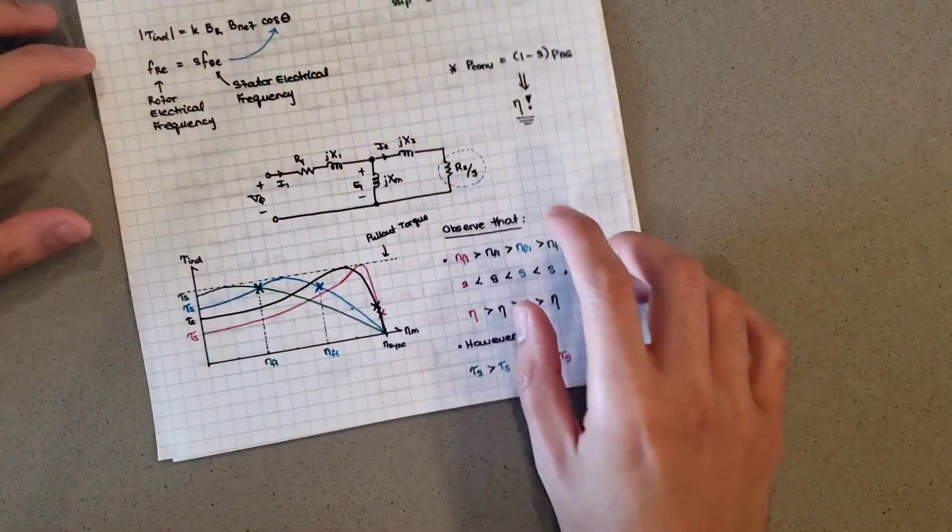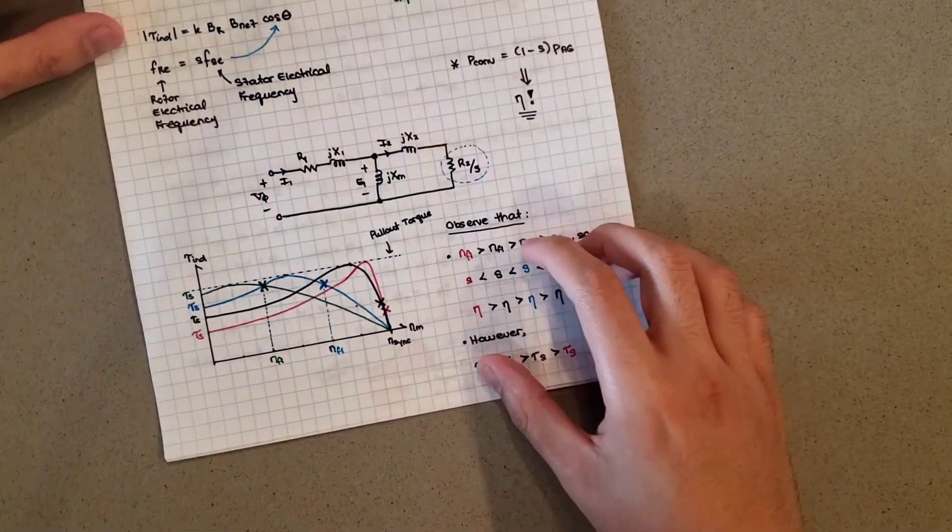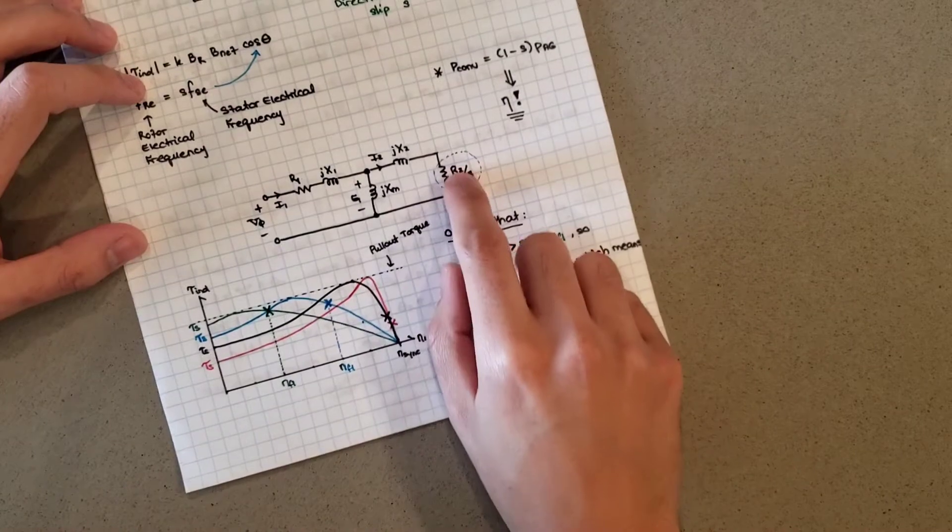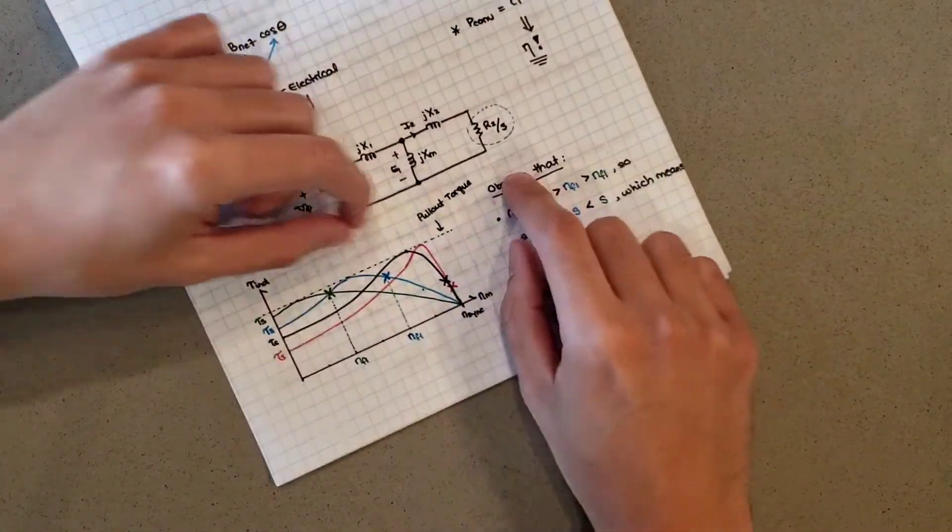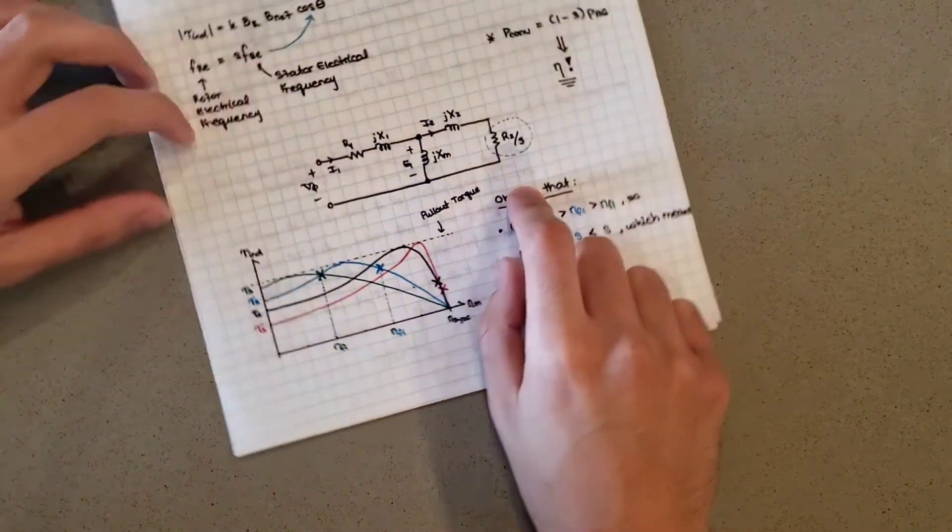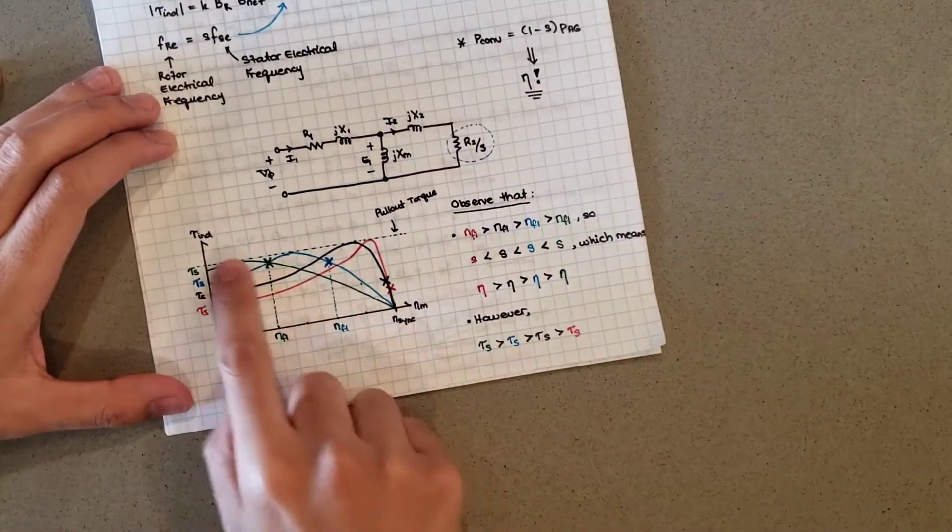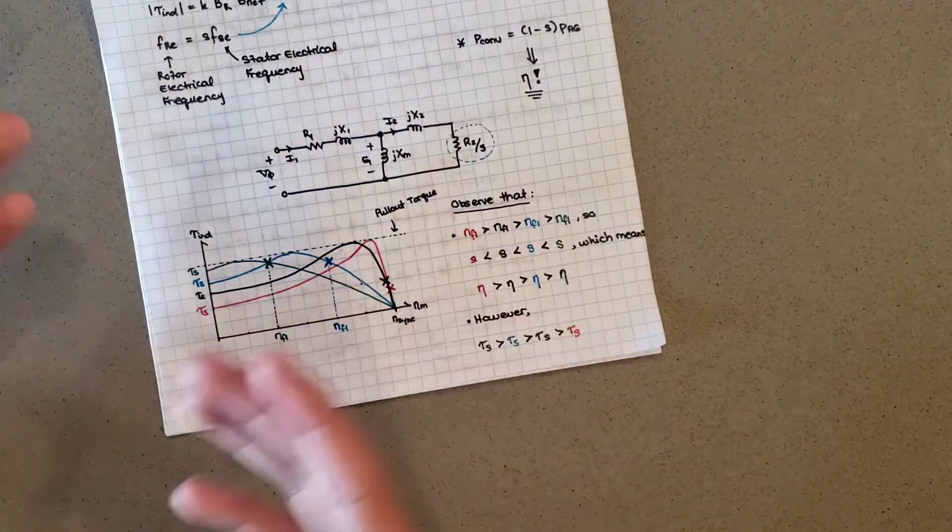Wound induction motors, by the way, make use of this. What is r2 again? r2, like I said, is the rotor coil resistance. So if I change this r2 value, I can change where the peak occurs. And remember what we said about these different curves - they have their own trade-offs, advantages, and disadvantages.